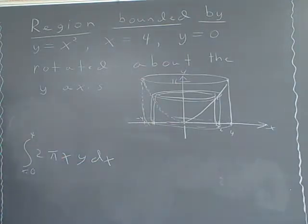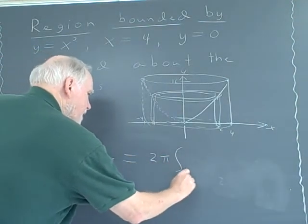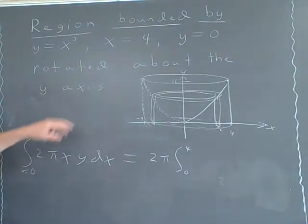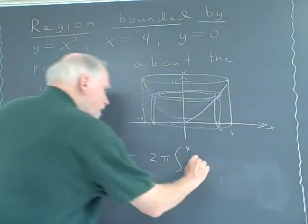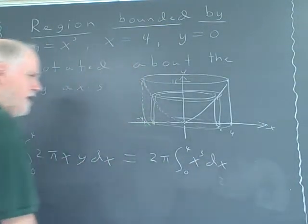Now, the only problem is we've got a y there, but there's two things we can do. I can factor out the 2 pi, which would be nice, zero to four. And x and y, of course, is x squared. So this is x times x squared, which is x to the third power dx. Now we're ready to do it.